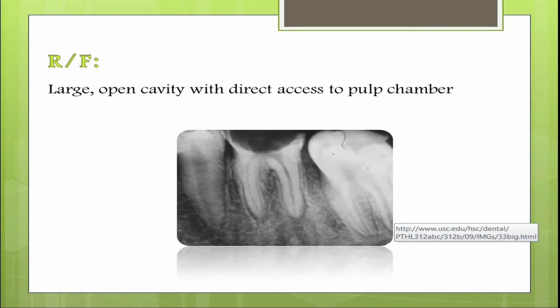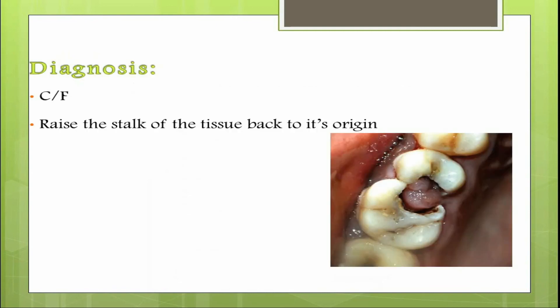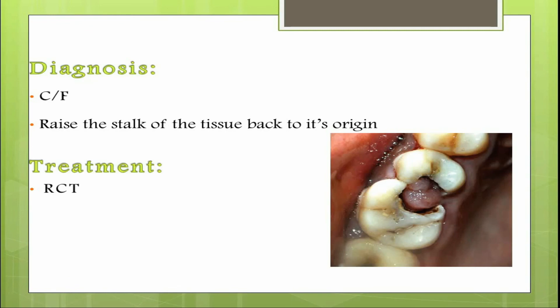Diagnosis is made exclusively from clinical features, but it is important to differentiate whether the polyp is of pulpal or gingival origin. To differentiate, trace the stalk of the tissue back to its origin — if it originates from the pulp, the tissue is seen coming from the tooth itself. Management involves removing the pulp polyp and proceeding with root canal treatment.